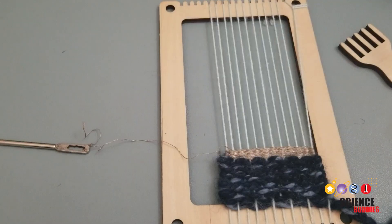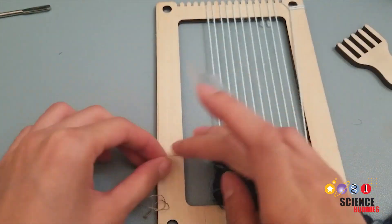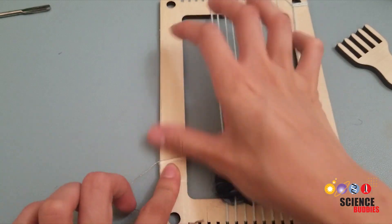Continue weaving. Weave about half an inch of rows of conductive thread. Leave about 8-9 inches of conductive thread. Tape down excess conductive thread to your loom.